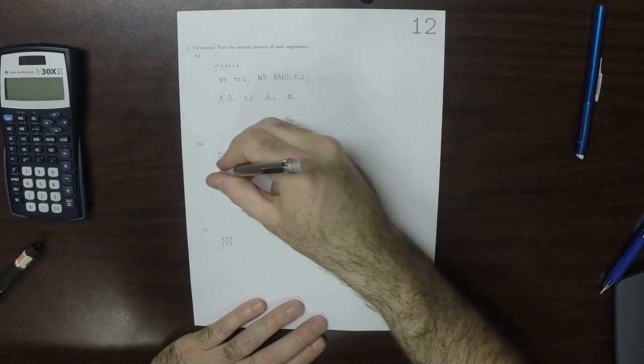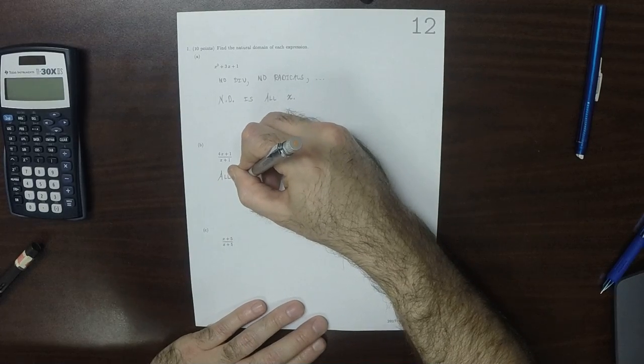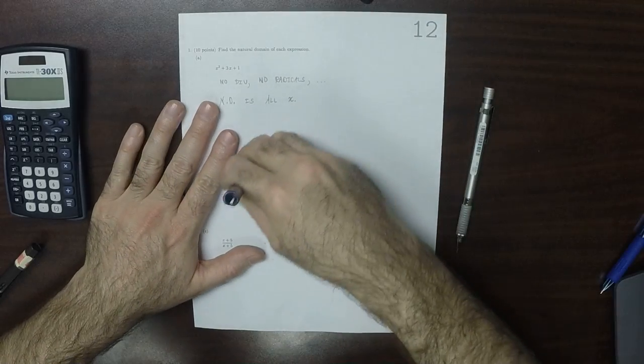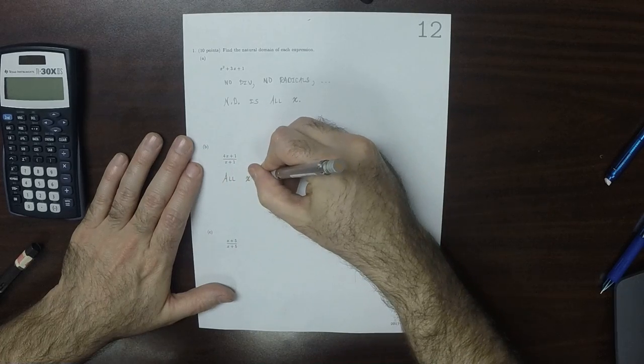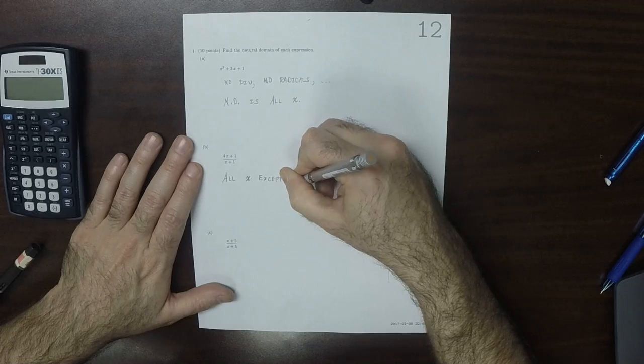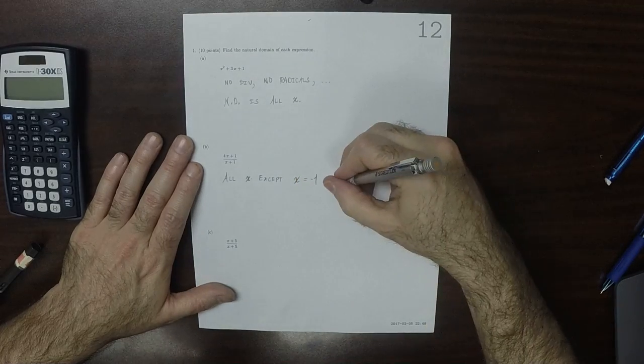This one, it's clear for similar reasons that the answer is all x, except x is negative 1, because that would be a division by zero.